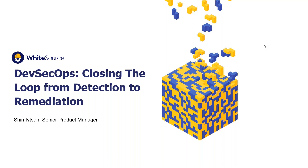Thank you for joining the webinar once again. Today we're talking about closing the loop from detection to remediation. If you are familiar at all with security vulnerabilities and specifically open source security vulnerabilities, you probably know that the detection of the vulnerabilities is probably the easiest part. It's really easy to know which vulnerabilities you have in your application using a dedicated tool or an open source tool. Detection of vulnerabilities is pretty easy. But the hard thing is to close the loop and actually remediate those vulnerabilities. We'll try to solve this very big challenge by giving you some basic steps that hopefully you can implement in your organization even starting tomorrow.